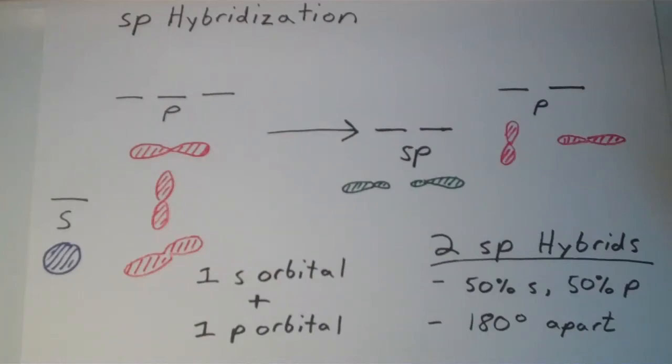In the last couple of videos we've been talking about hybridization. We saw that sp3 hybridization is when an s orbital combines with all three of the p orbitals to result in the formation of four sp3 hybrids, and we observed that in molecules such as methane and ammonia.